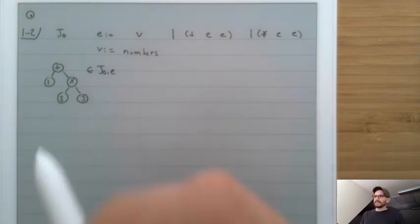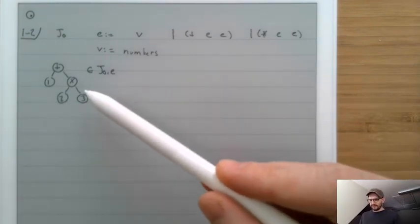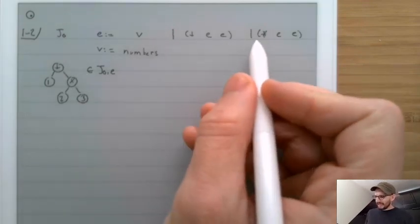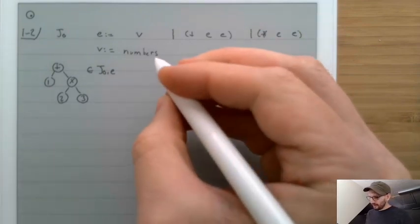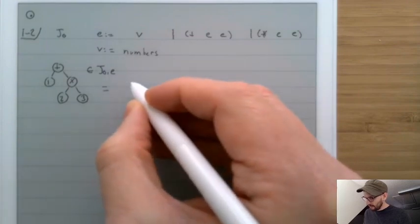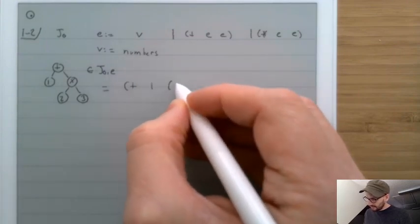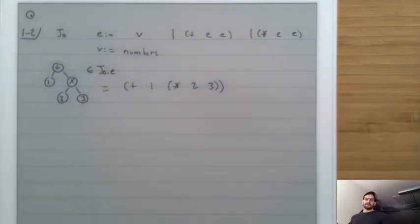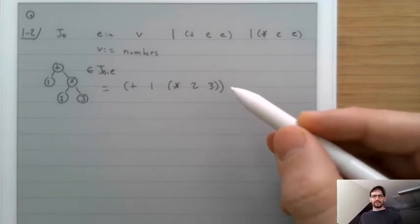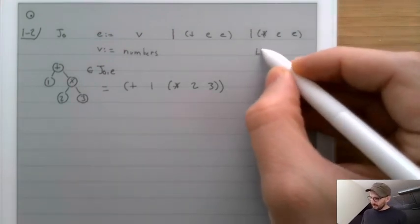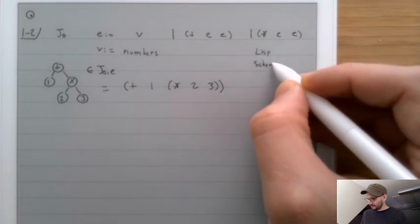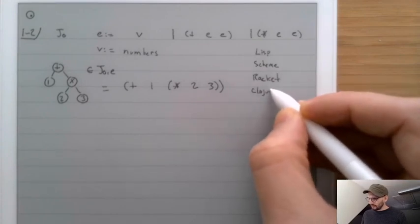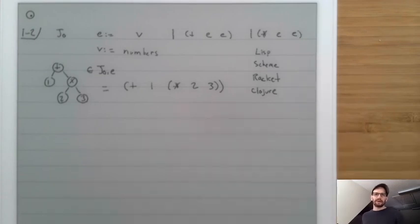It can be tedious to write these trees, so we abbreviate them in parenthetical notation. We would write that same tree as: (plus 1 (times 2 3)). If you're familiar with some programming languages, there are languages whose syntax looks exactly like this — for example, Lisp, Scheme, Racket, Clojure, and a number of other languages have a parenthetical syntax like this.